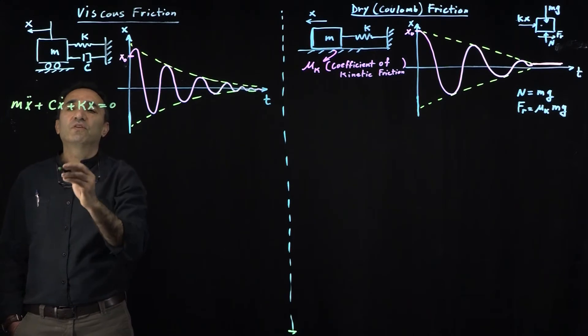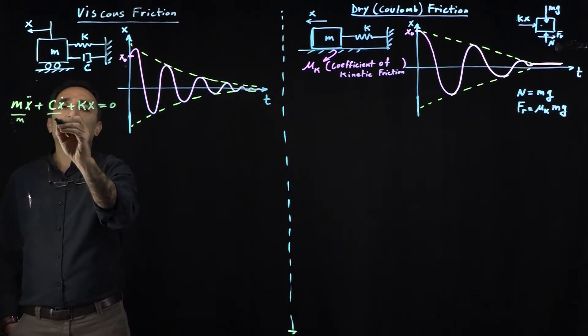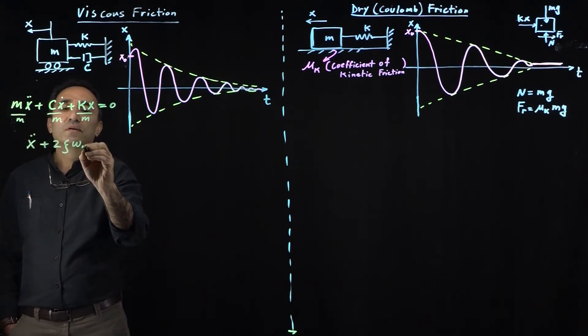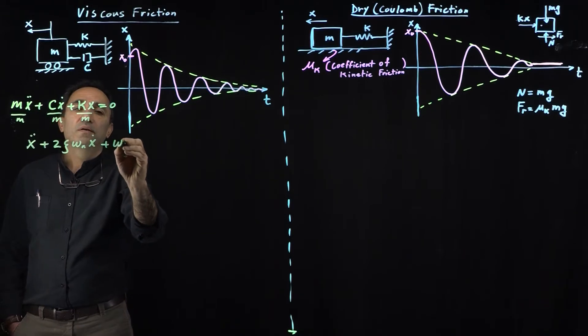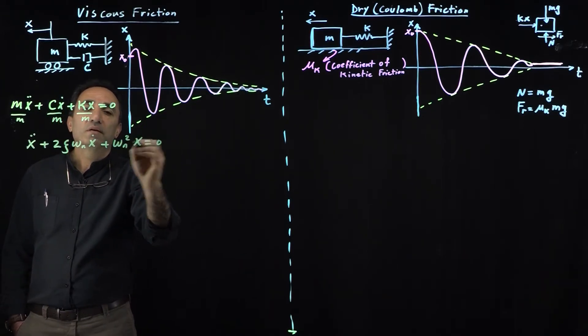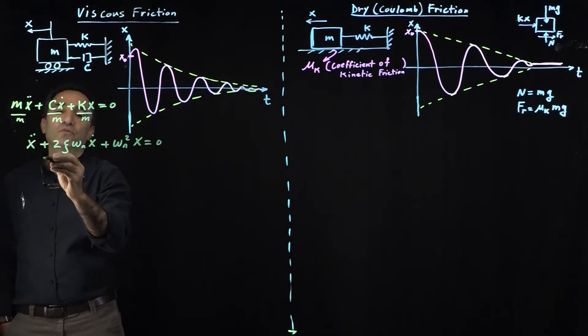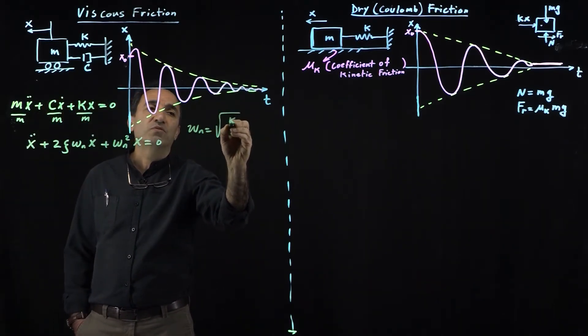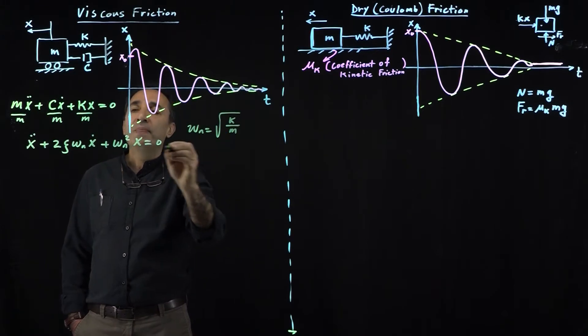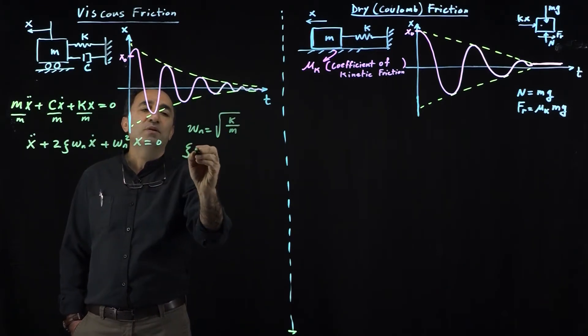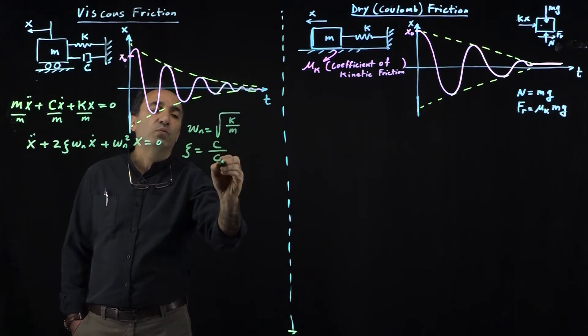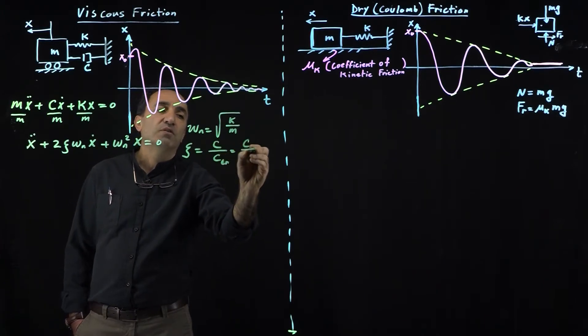This is a homogeneous differential equation. If you normalize this by dividing by mass, it becomes a differential equation in this format. We have omega_n, which is the natural frequency, the square root of k over m. This zeta is called the damping ratio, the ratio of the actual damper divided by the critical damper, which is C divided by square root of 2km.